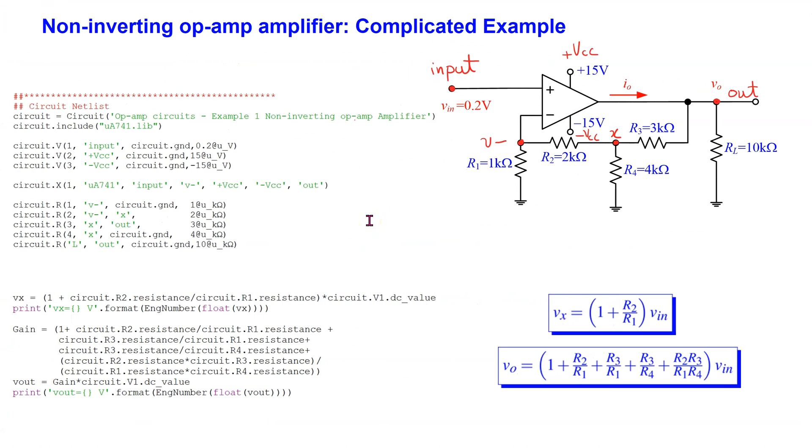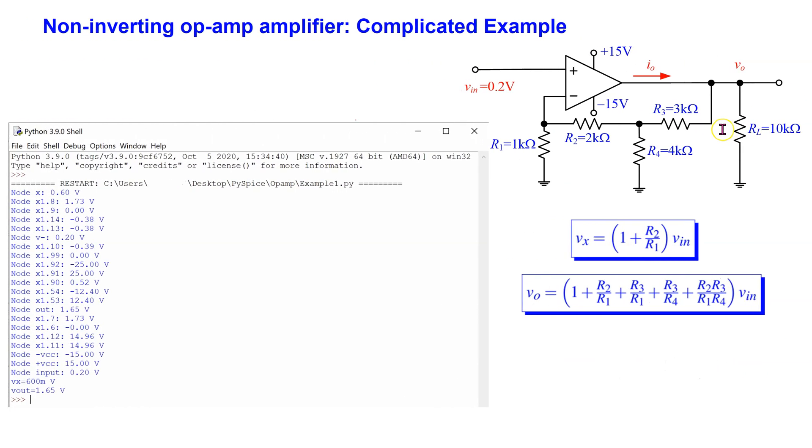Next, let us take a look at a more complicated example. This is a non-inverting op-amp amplifier with a Y or a T structure of resistors in the feedback path. Using the descriptive node labeling as before, we can translate the circuit into a netlist as shown here. We can also program the gain equations for this circuit obtained using the ideal op-amp assumption into the Python script. When we simulate this circuit, we can verify that the simulated output voltage and the theoretical output voltage match perfectly. The complete Python code to simulate this circuit is posted in the video description and comments below.